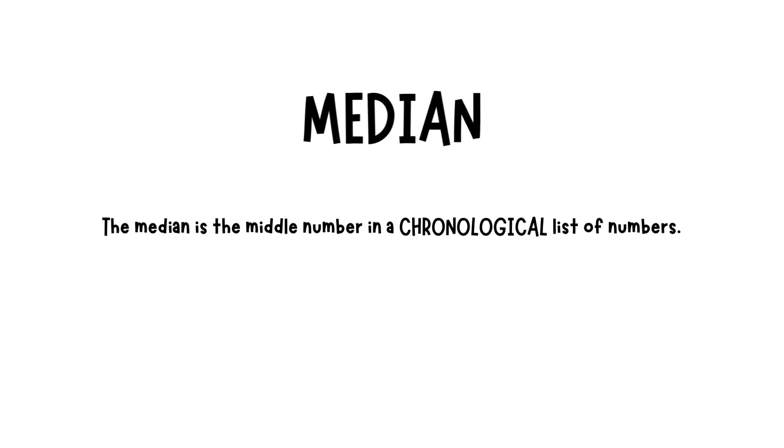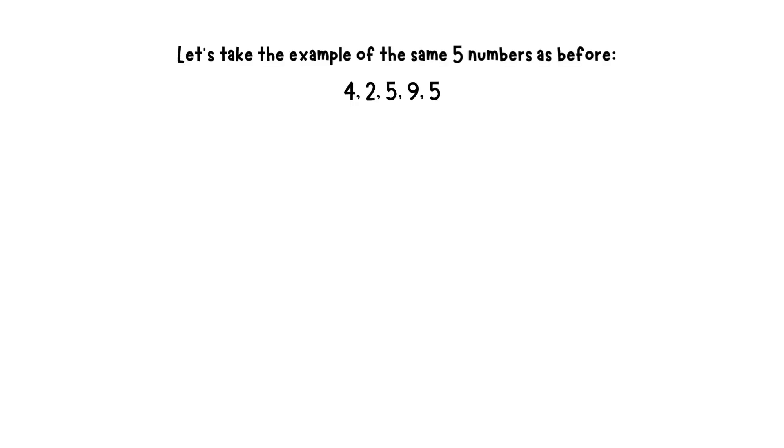Median. The median is the middle number in a chronological list of numbers. Let's take the example of the same five numbers as before: 4, 2, 5, 9, 5.